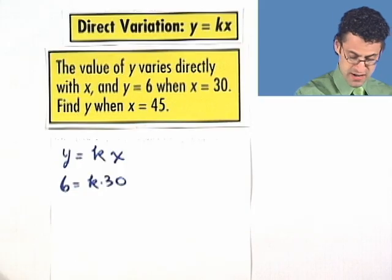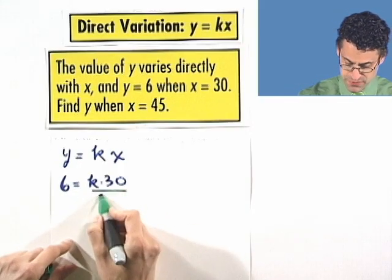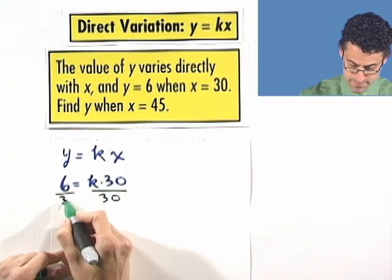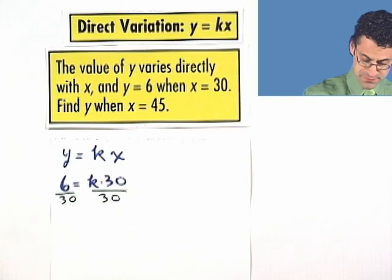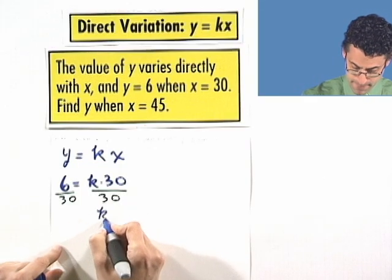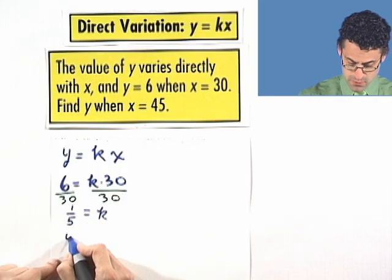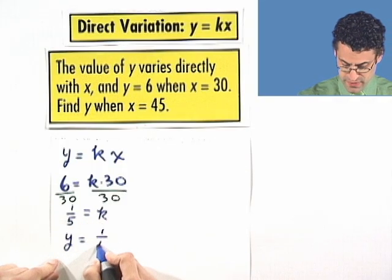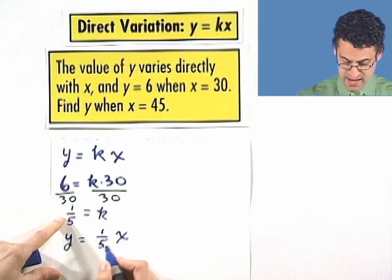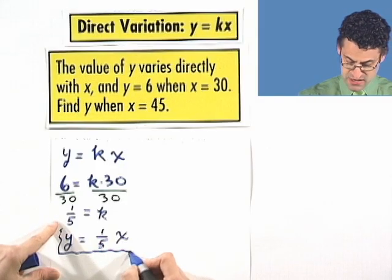So in particular, I'd have 6 equals k times 30. And if I divide both sides by 30 to undo the multiplication of 30, I would see that k equals one-fifth. And so I'd see that y equals one-fifth times x. So that's the actual direct variation.